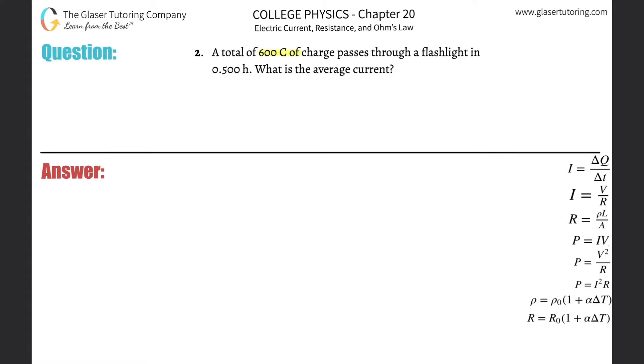Number two: a total of 600 Coulombs of charge passes through a flashlight in 0.5 hours. What is the average current?